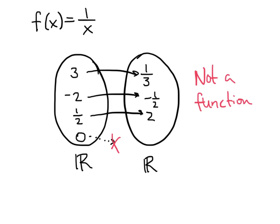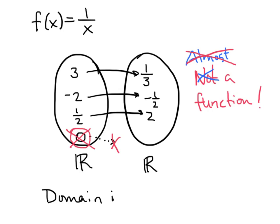It's so close to being a function — every other real number has exactly one arrow coming out of it. So is there a way to fix it? The way we fix it is by modifying the domain. The number 0 is the problem: if we throw 0 away out of our domain, now this really is a function. We indicate that by saying the domain is all real numbers except 0.